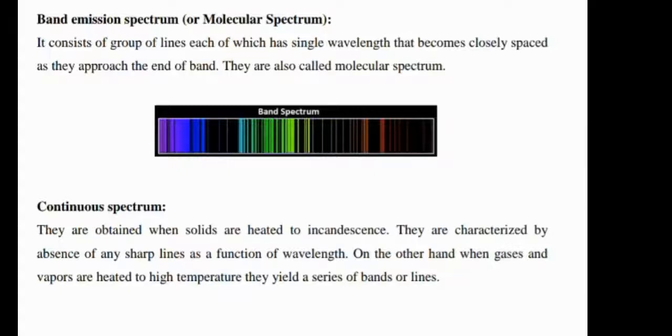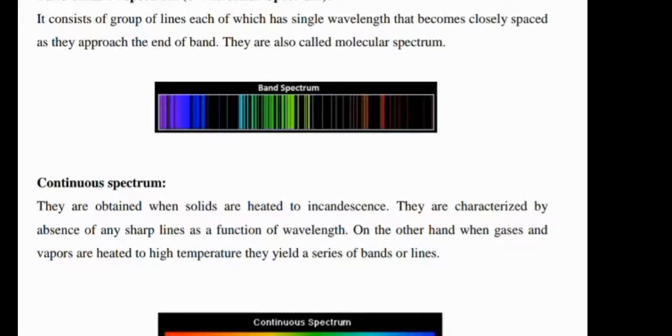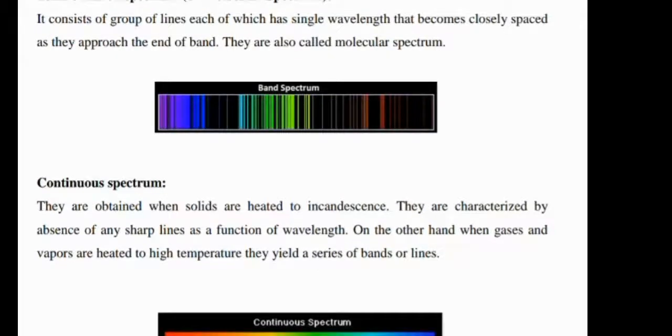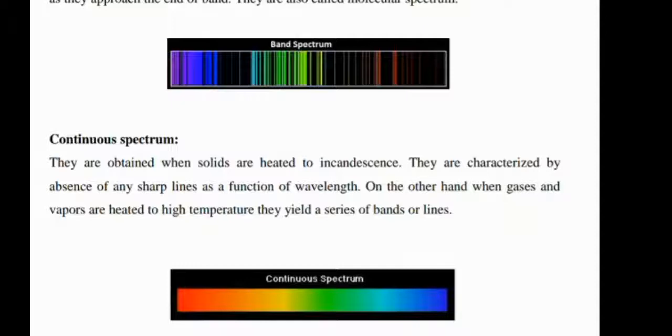Third one is the continuous spectrum. They are obtained when solids are heated to incandescence and are characterized by the absence of any sharp lines as a function of wavelength. On the other hand, when gases and vapors are heated to high temperature, they yield a series of bands or lines.